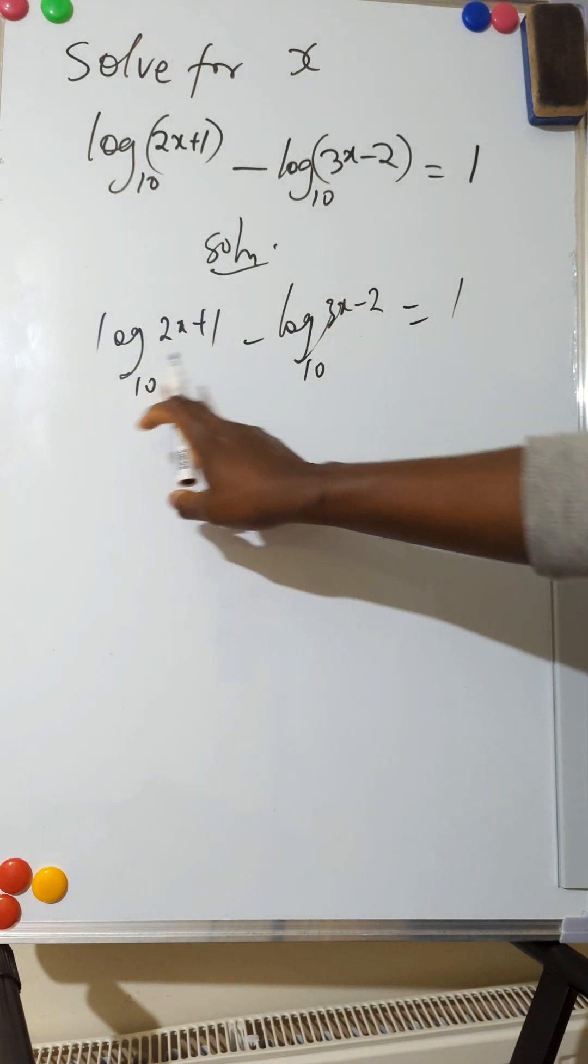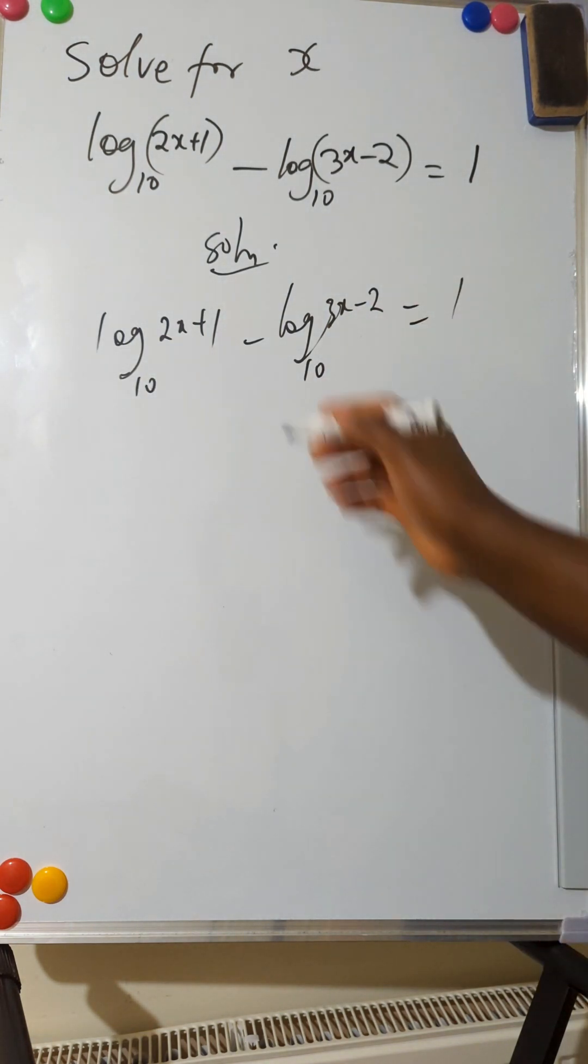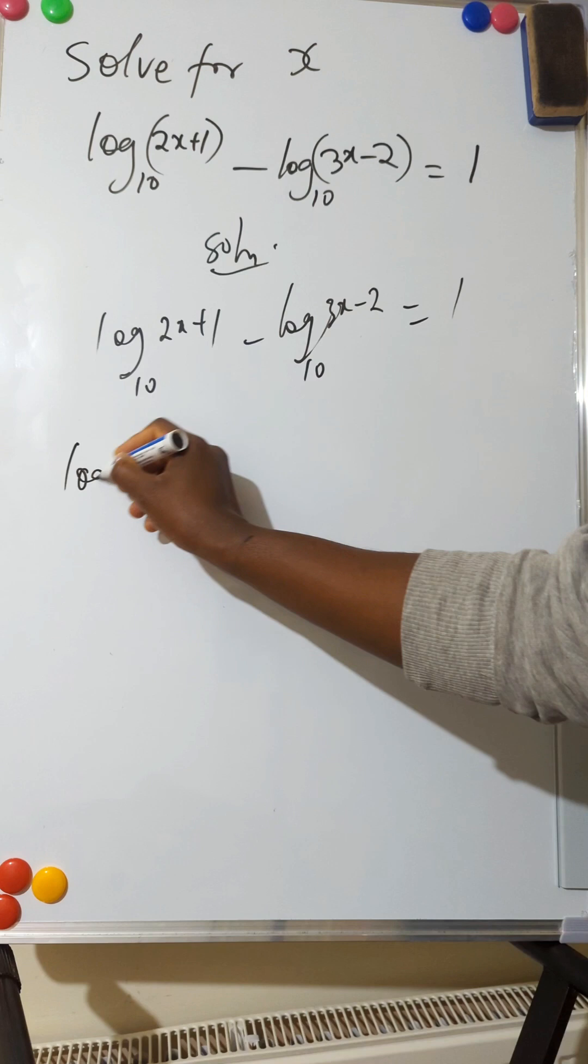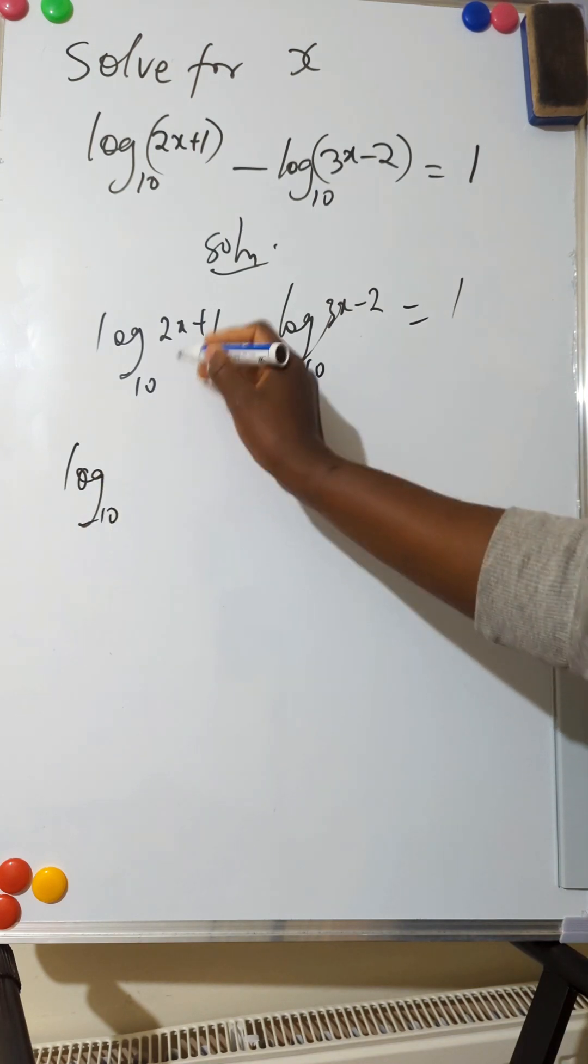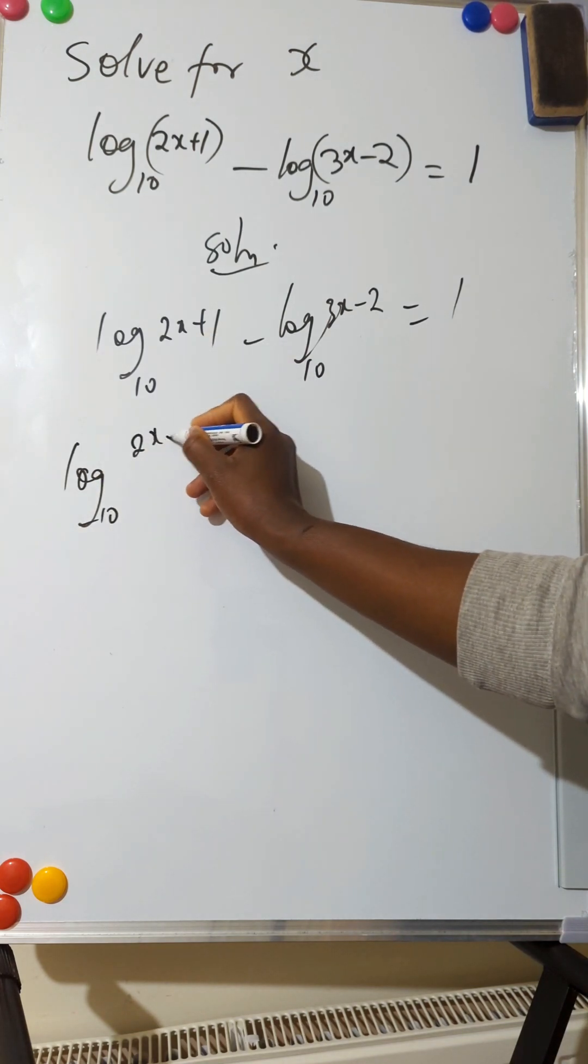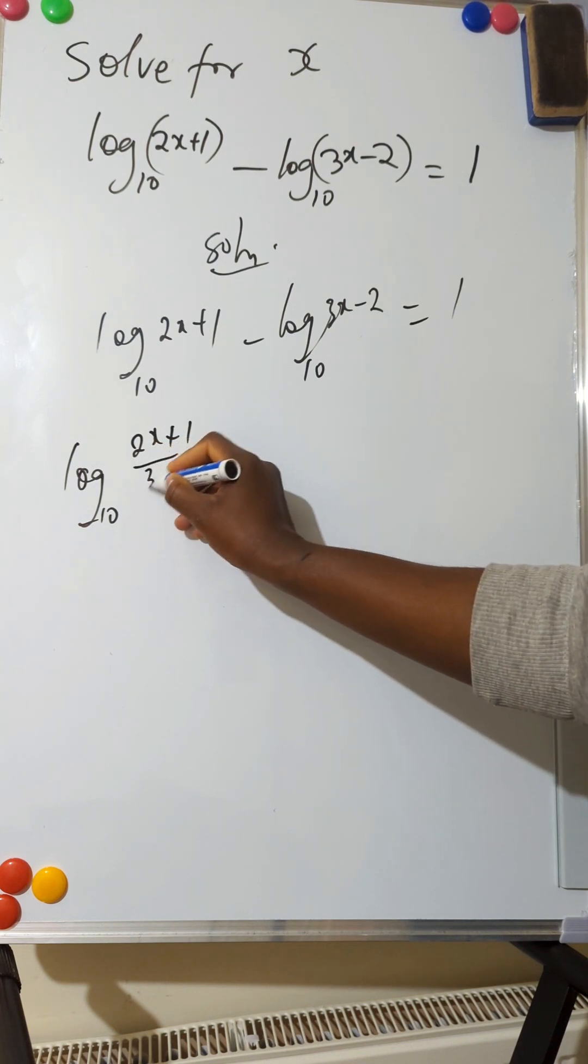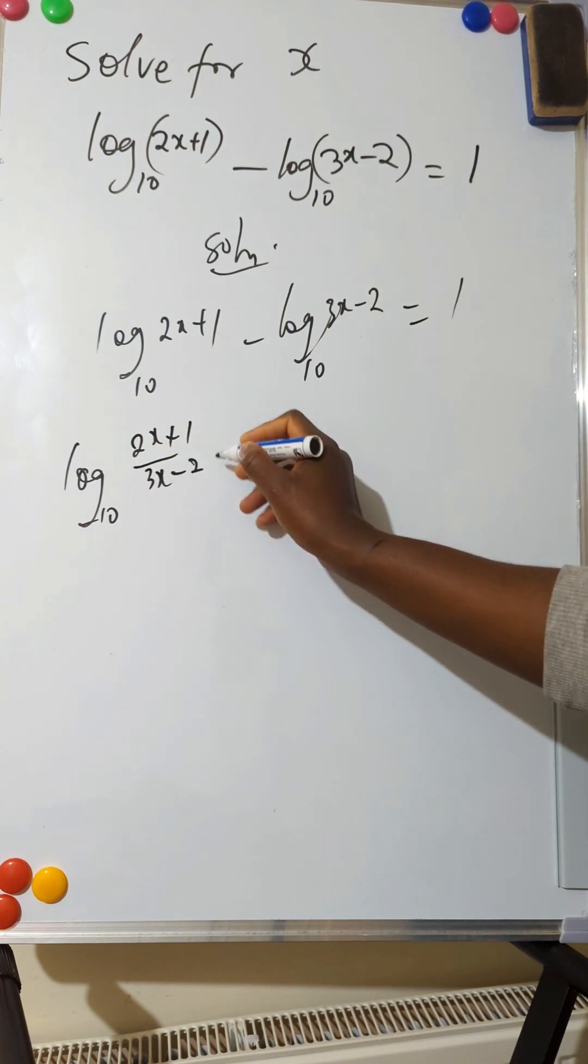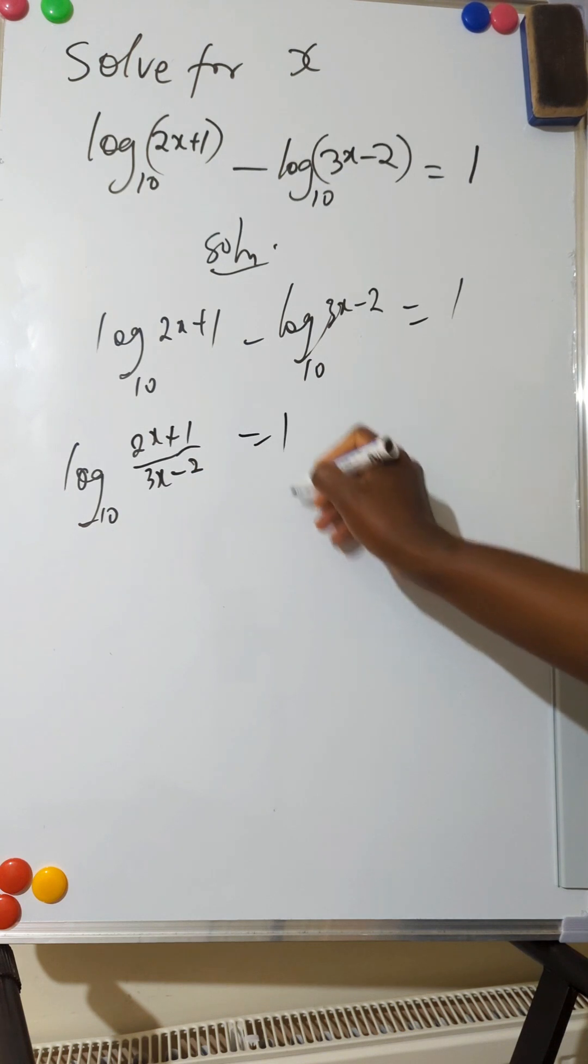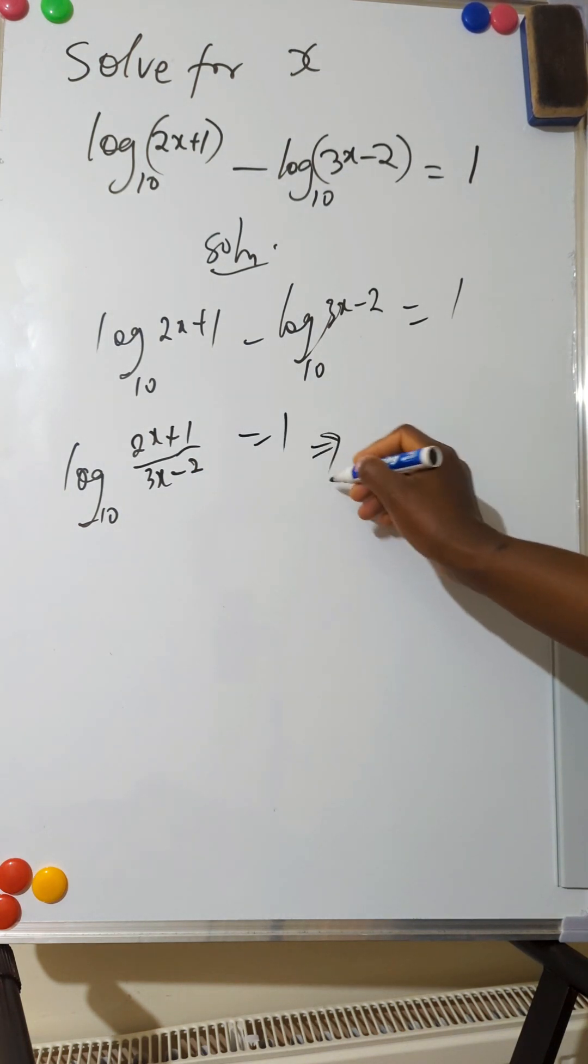So you take one of the base 10. Log with base 10, you have (2x+1) all over (3x-2), and this equals 1. This implies that...